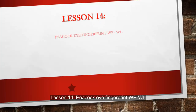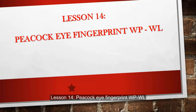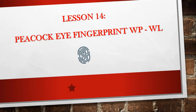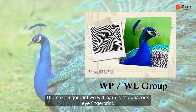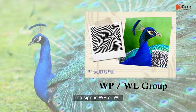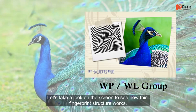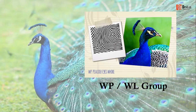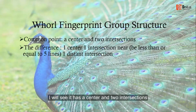Lesson 14: Peacock Eye Fingerprint — WP and WL. The next fingerprint we will learn is the peacock eye fingerprint. The sign is WP or WL. Let's take a look on the screen to see how this fingerprint structure works.